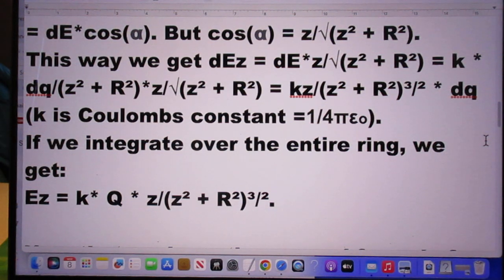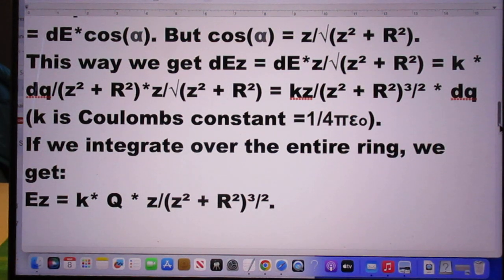And then he takes the derivative of this because he wants to know what DEZ is, and then he finds that DEZ is K. I will not read it, you read it. K is Coulomb's constant.